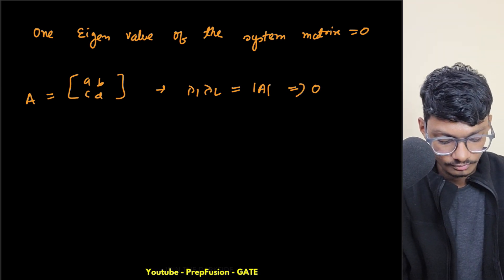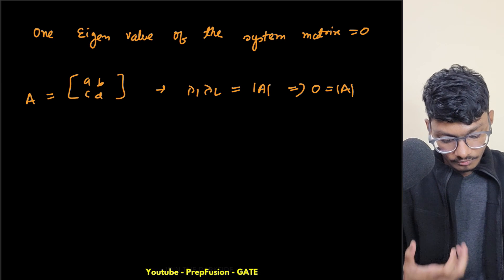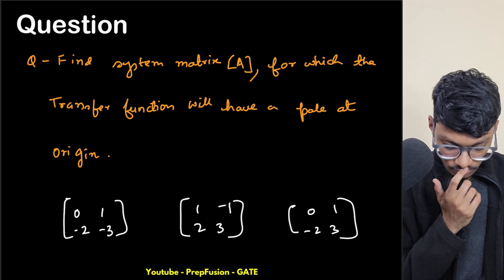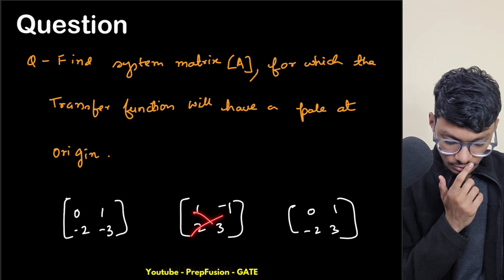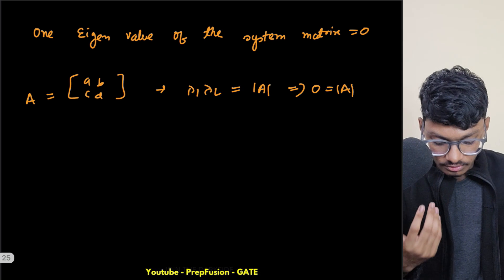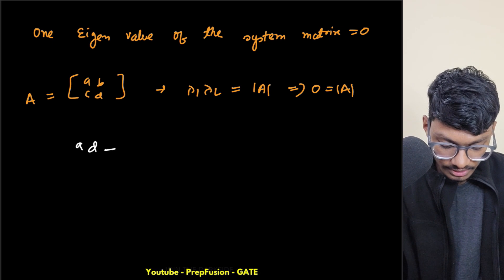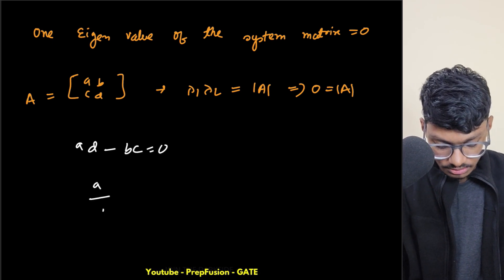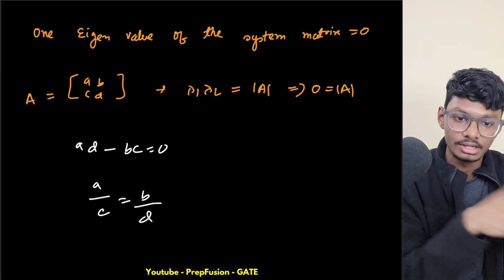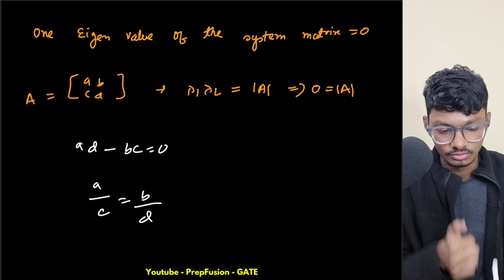So det(A) = 0 is the condition to apply. The determinant ad minus bc equals zero, which means a/c equals b/d. Checking the options: some had determinants of 2, 3+2=5, or other non-zero values. Whichever matrix option satisfies ad minus bc equals zero is the correct answer. I don't have all the options compiled, but that is the method to identify the answer.